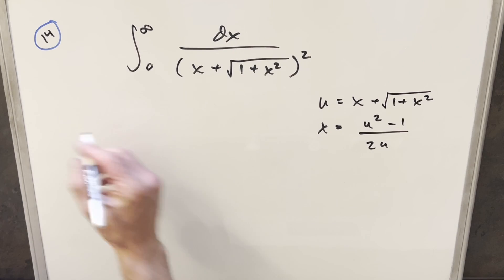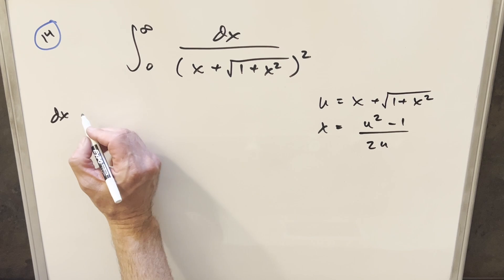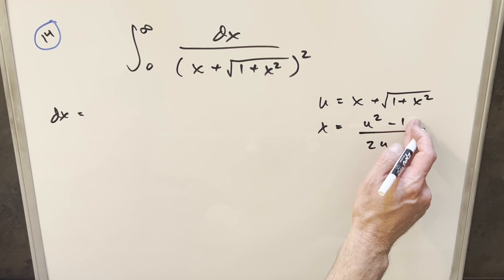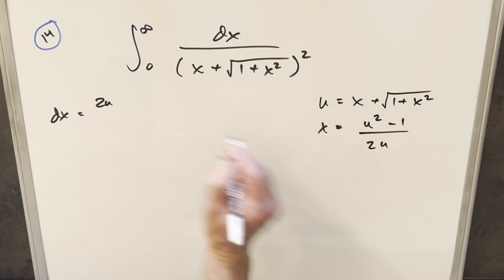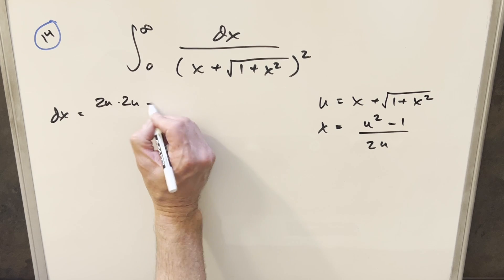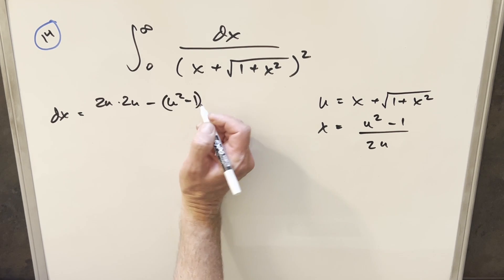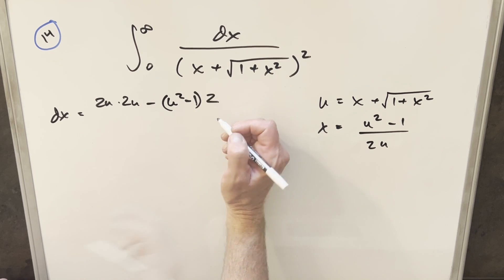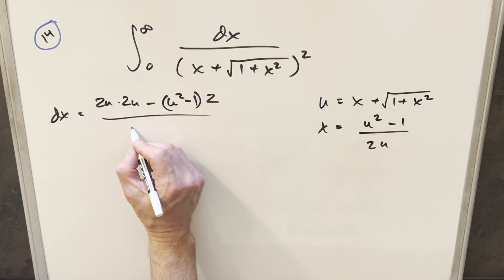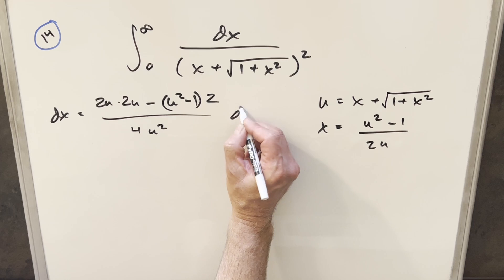Next, we'll go ahead and take a derivative on this. So for our dx value, I'm going to use the quotient rule. So first, take the derivative of the numerator, that's going to be 2u, times the denominator, another 2u. Then we'll keep the numerator, u squared minus 1, times the derivative of the denominator, that's just going to be 2. And then square the denominator, that's going to give me 4u squared du.